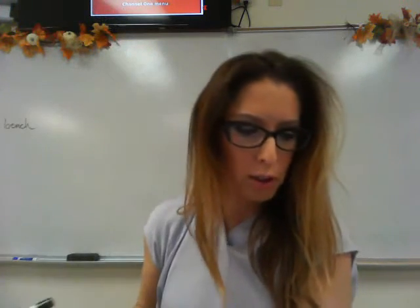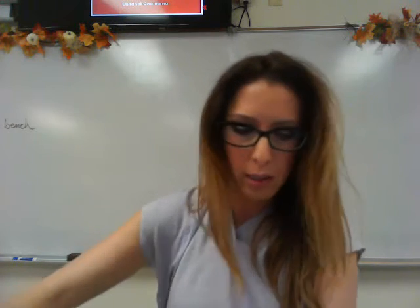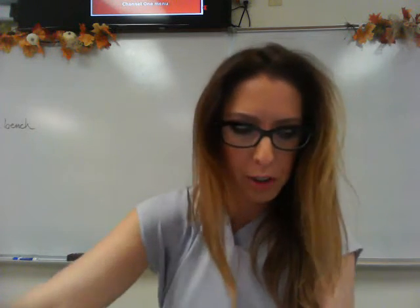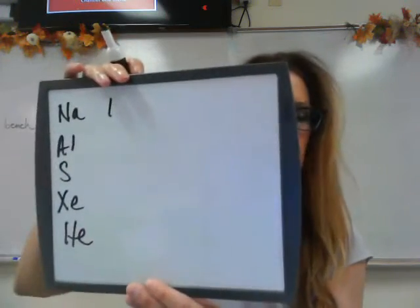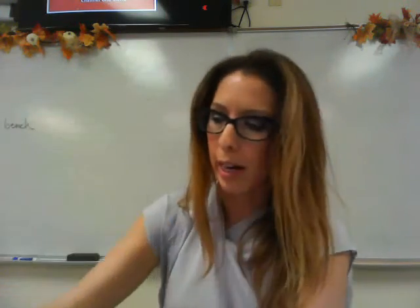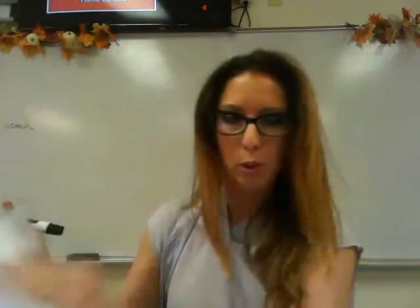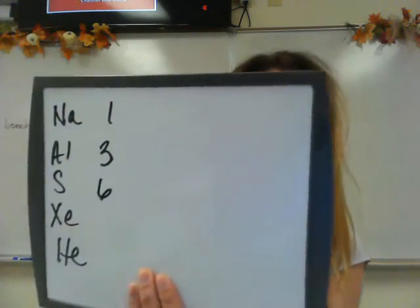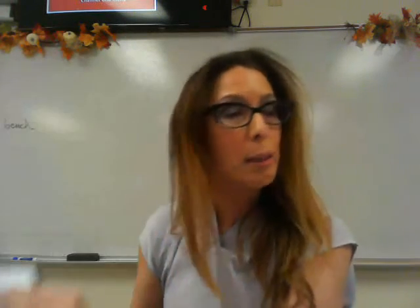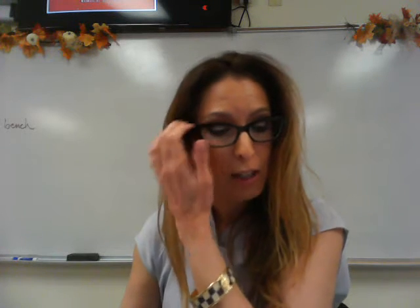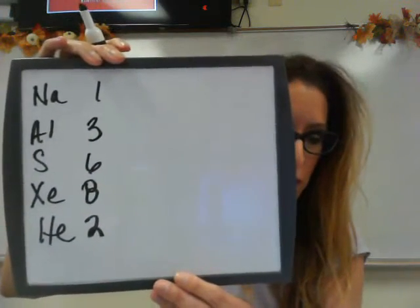Student exercise 11 asks you to use the periodic table to predict the number of valence electrons for each element. Sodium is in group 1A — 1 valence electron. Aluminum is in group 3A — 3 valence electrons. Sulfur is in group 6A — 6. Xenon is in group 8A — 8. Helium is in group 8A but is the exception: it only has 2 electrons in its outermost shell, the 1S, so it has 2 valence electrons.